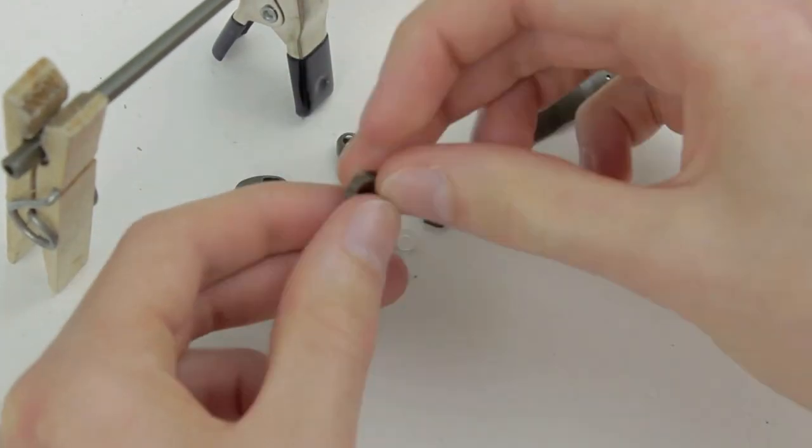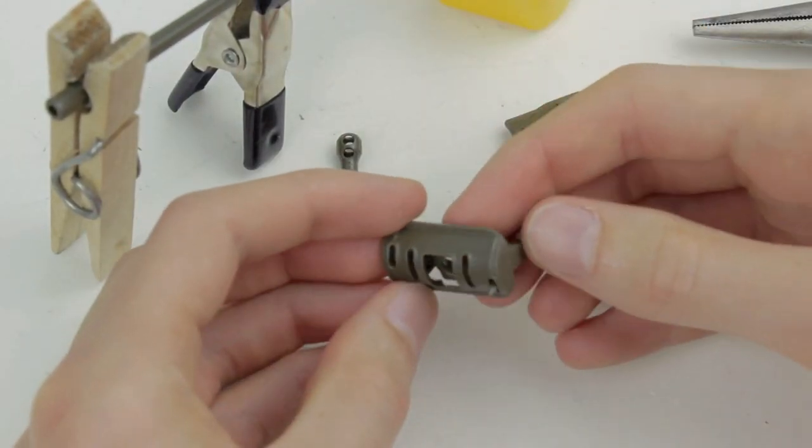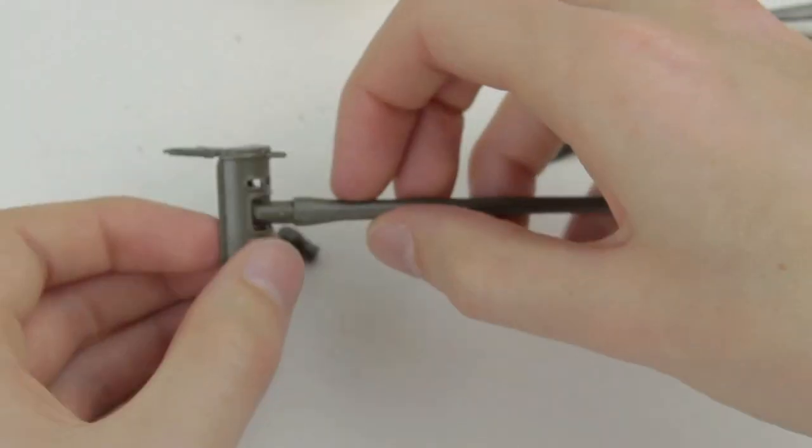Plastic washers included with the kit are to be put into the hinges on the gun to ensure that it moves smoothly. The gun barrel had quite a prominent join seam along its length which required sanding.